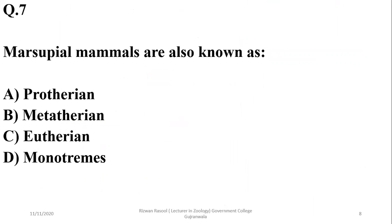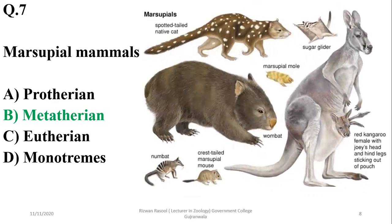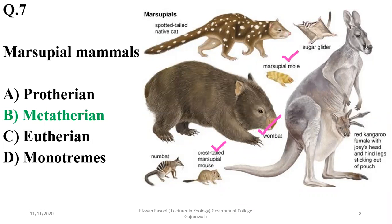Question 7: Marsupial mammals are also known as Metatherians. Prototherians are egg-laying mammals, Metatherians are marsupial mammals, and Eutherians are placental mammals. Monotremes are also Prototherian. Marsupials include examples such as kangaroo, numbat, quoll, marsupial mouse, wombat, marsupial mole, sugar glider, and spotted-tail native cats. The right option is B.